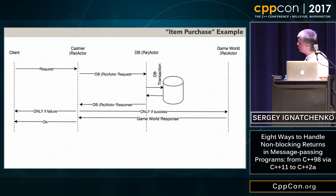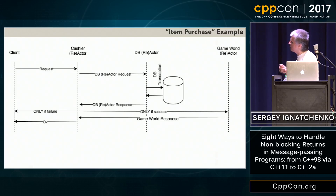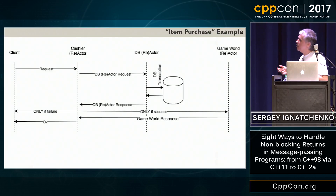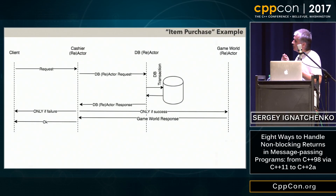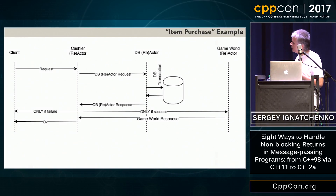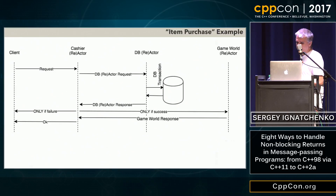On receiving the DB reply, there are two possible cases. If the transaction failed, we return an error to the client. If the purchase was successful, we issue another request to a game-world reactor so the item becomes available in the game world. On receiving the reply back from the game-world, we send an OK reply to the client. By the standards of distributed systems, it qualifies as a very simple use case, but it is sufficient to demonstrate the differences in non-blocking processing.